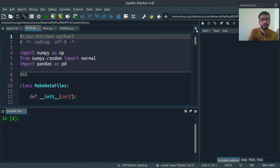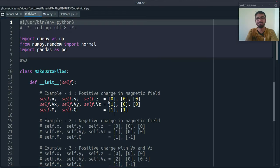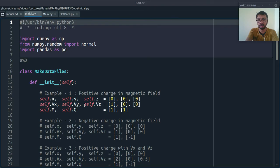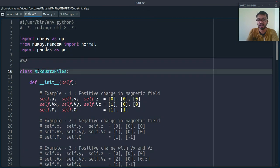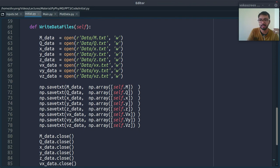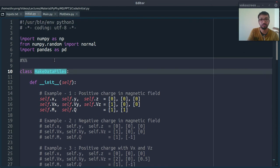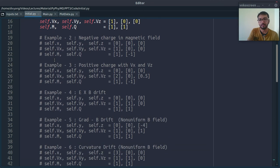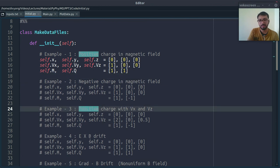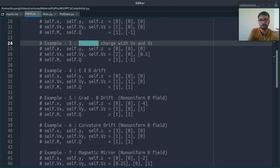Now, initial.py. Let me maximize this window so that you can see. So, this initial.py is this. Here I have created this class, make data files. And, these are the examples which we are going to discuss in future videos. For example, positive charge, negative charge, some E cross B drift, all these examples we will discuss.